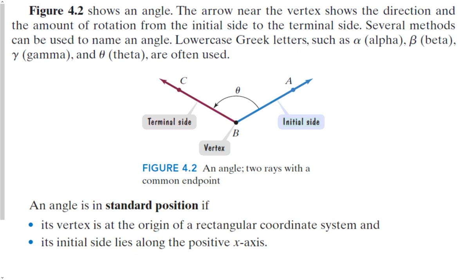This next figure shows an angle. The arrow near the vertex shows the direction and the amount of rotation from the initial side to the terminal side. As we go from the initial side — the blue one — to the terminal side — the red one — we can see that my angle opens from the blue side to the red side. Most commonly, we name angles with lowercase Greek letters like alpha, beta, gamma, and most commonly, theta. Unlike naming an angle ABC like you would in geometry, we're going to stick with angles that we can name with just one variable.